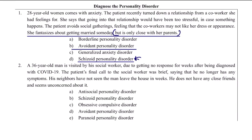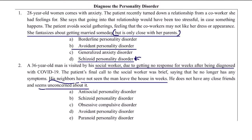Final case: a 36-year-old man is visited by his social worker after getting no response for weeks following a COVID-19 diagnosis. His final call was brief. Neighbors have not seen him leave the house in weeks. He has no close friends and seems unconcerned about it. He is not acting out or creating problems — this is a typical schizoid personality disorder. He is a loner who is content with his isolation.